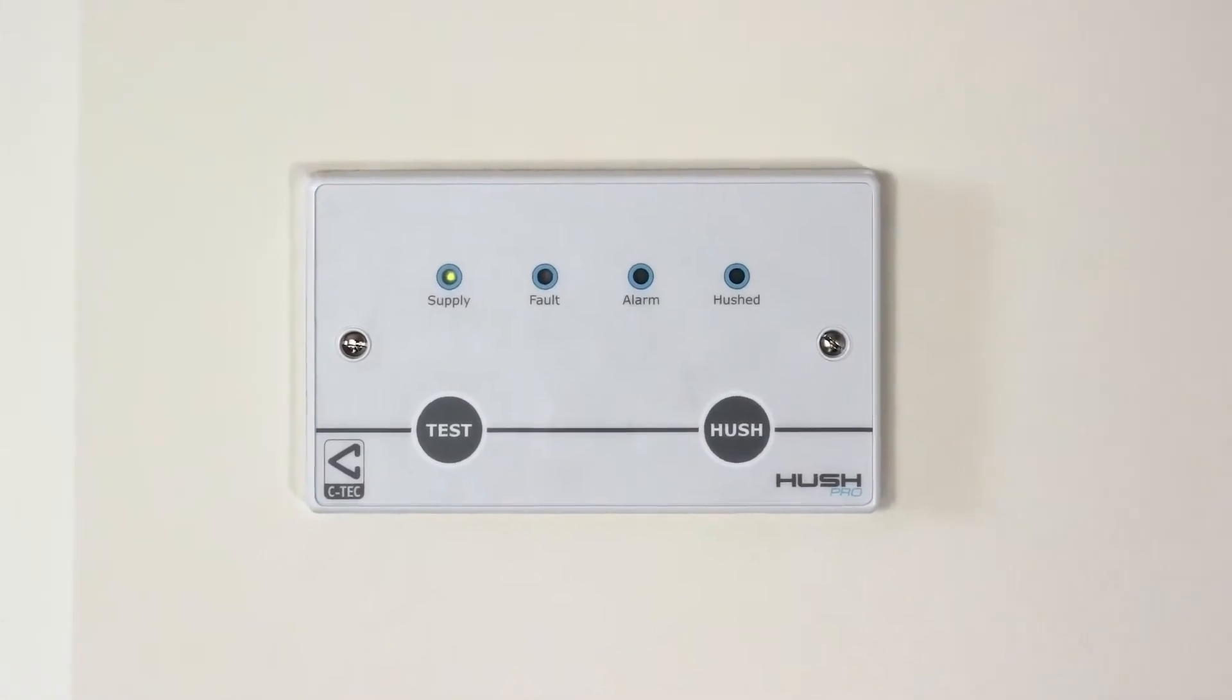Let's begin by taking a look at how Hush Pro works in an individual dwelling. Central to the system is the Hush Grade C controller, which is typically located in an apartment's entrance way, as you can see here.